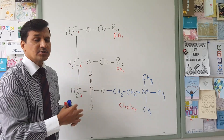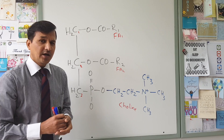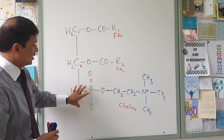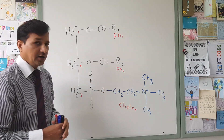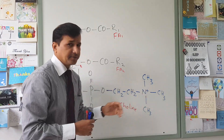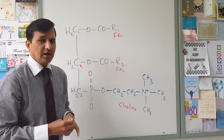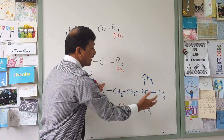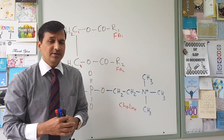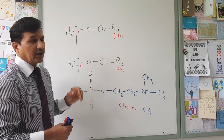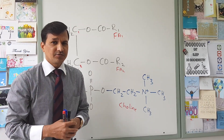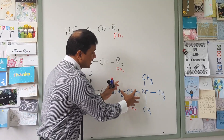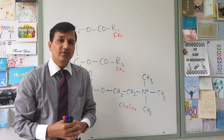It is the abundant glycerophospholipid present in the membrane — phosphatidylcholine — and it has two fatty acids attached to the first and second carbon atom. The third carbon has phosphate attached to choline. Now if you remove this choline and attach ethanolamine, that will become phosphatidylethanolamine. If you remove this choline and attach inositol 4,5-bisphosphate, that will become phosphatidyl inositol 4,5-bisphosphate. Depending on what functional group is attached to the phosphate, you get that kind of glycerophospholipid.